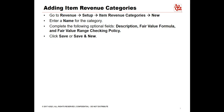To create an item revenue category, go to Revenue, highlight Setup, highlight Item Revenue Categories, click New. Enter a name for the category. This name appears in a list. Use unique, descriptive names, but keep them short so they can be read in the list. For example, if you want two license categories, use names such as license-perpetual and license-term.